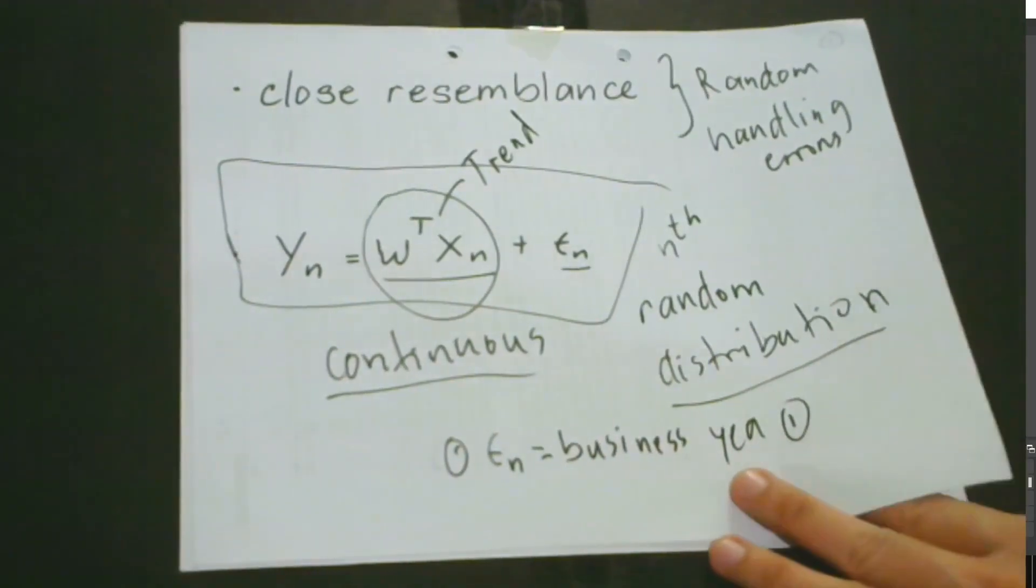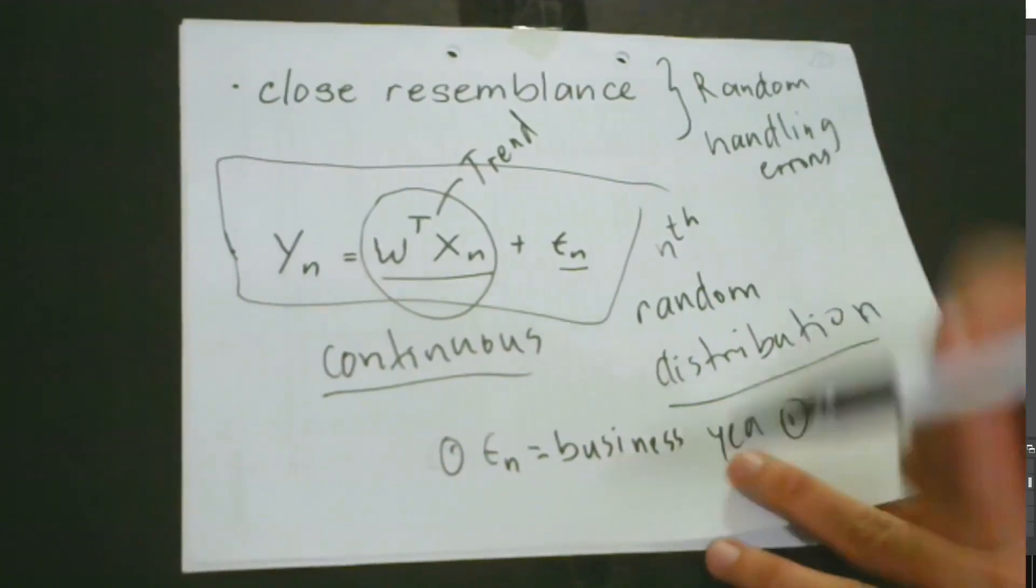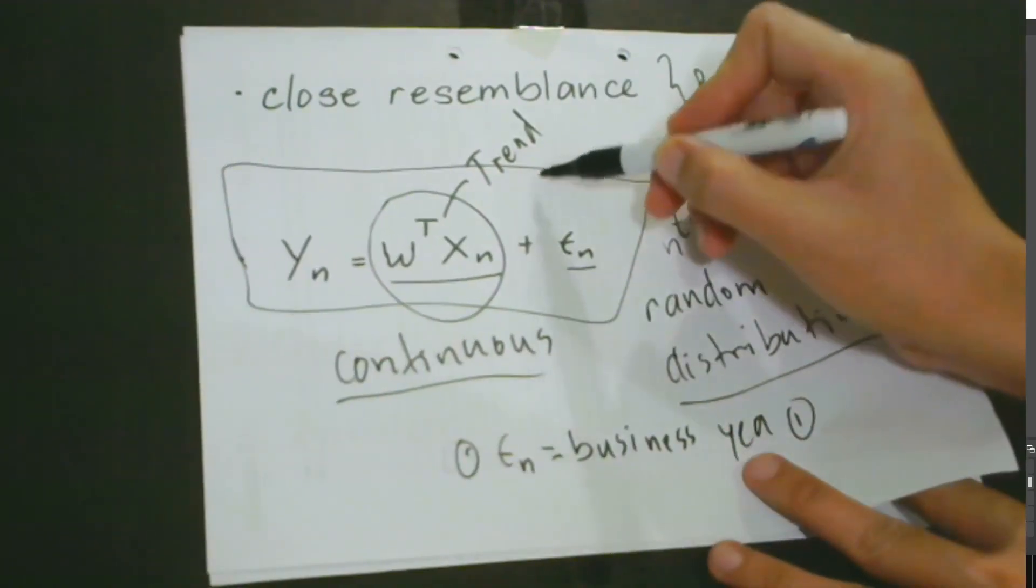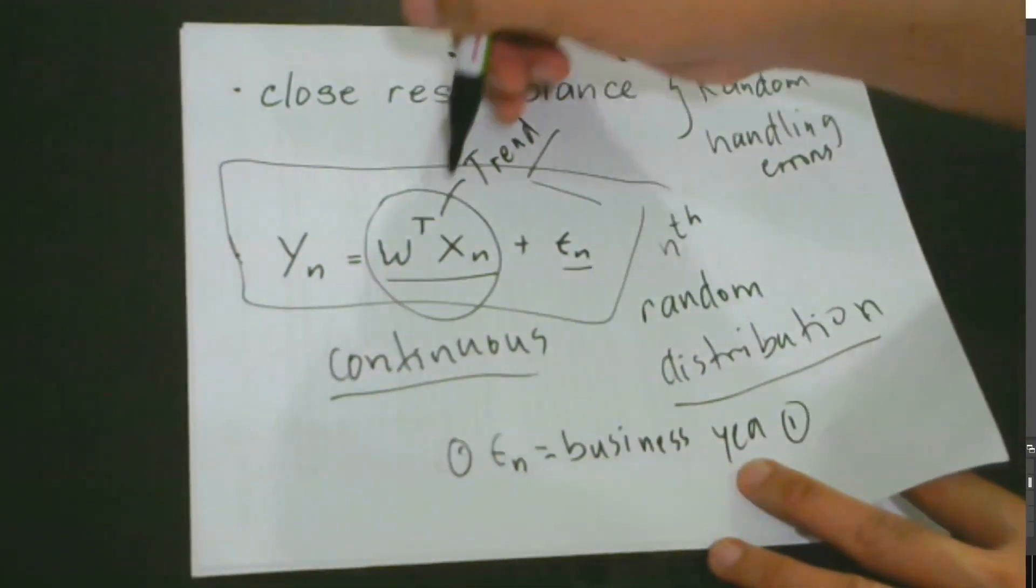This is the trend or the drift. Notice that when we make a graph of our model, you could see the direction. It could be going up, it could be going down. This is the component that does that.